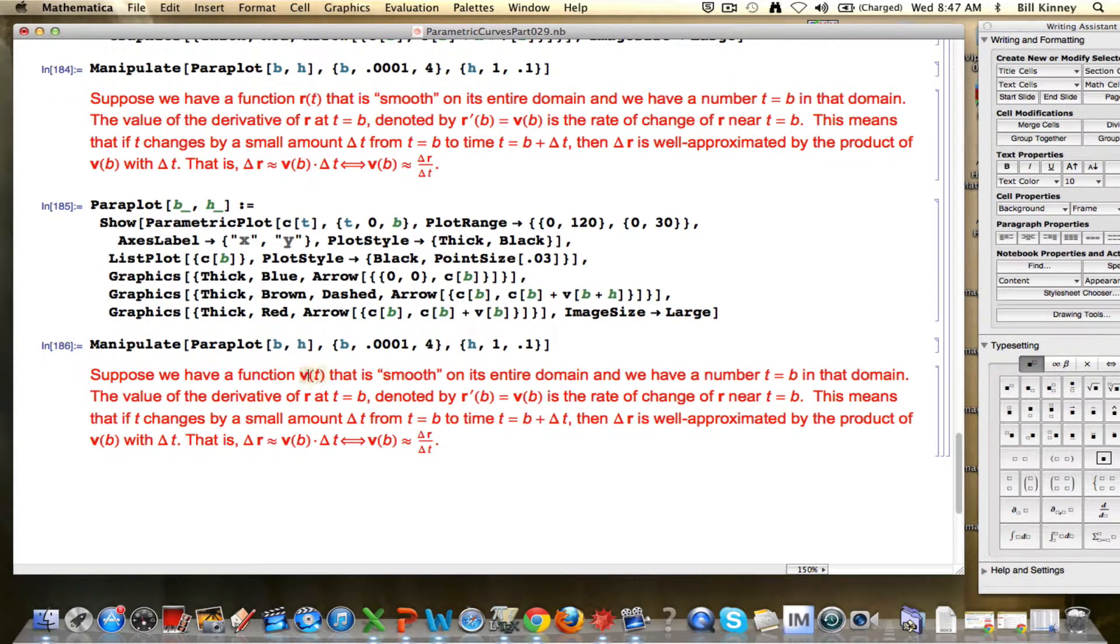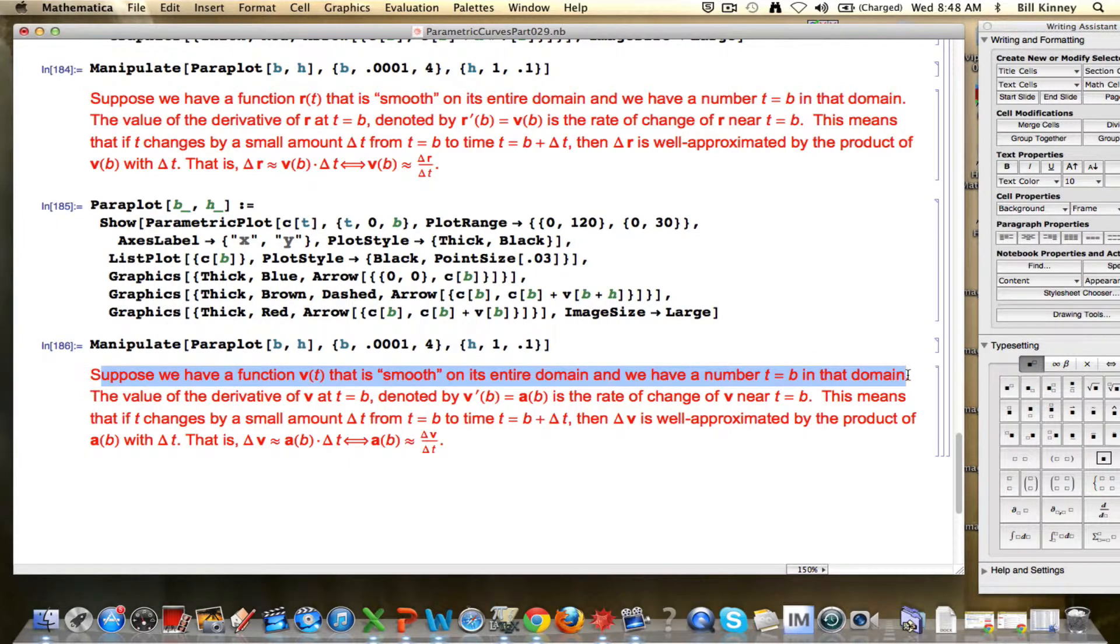Can we restate this in terms of the velocity vector? What I'm going to do is I'm going to change all the R's to V's. Hopefully I find them all here. I'm going to change all the V's to A's. And this statement is still going to be a true statement. Bear with me here. Almost done. I hope I haven't made any mistakes anywhere. I'll look this over. Okay, so now we're supposing we have a function V of t that's smooth on its entire domain. That first statement really is effectively no different than this first statement. We're just using a different letter. But I am thinking of these vectors as being different quantities. I am thinking of this as being a velocity vector. The value of the derivative of V at time equals B, denoted by V prime of B, is what we call the acceleration vector at that moment in time B.